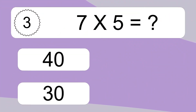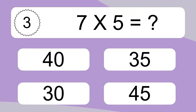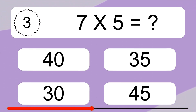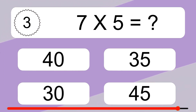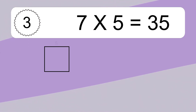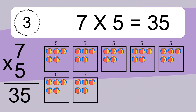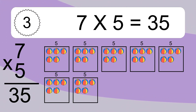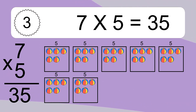7 times 5 equals what? 7 times 5 equals 35. We have 7 boxes, and each box has 5 colorful balls inside. If you count all the balls in all the boxes together, you will have 7 times 5 balls. This equals 35 balls.